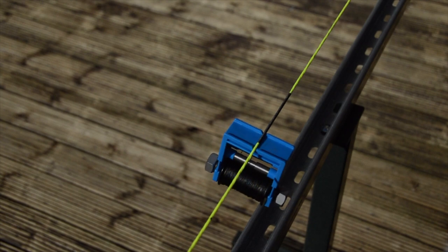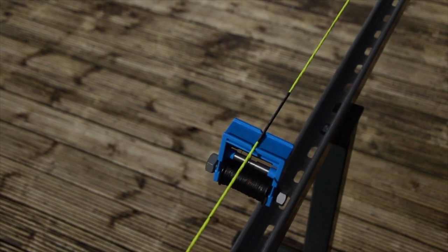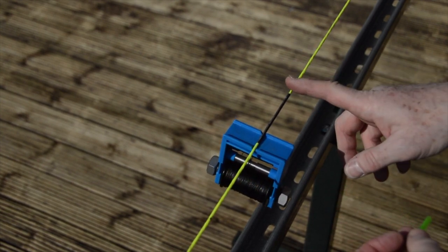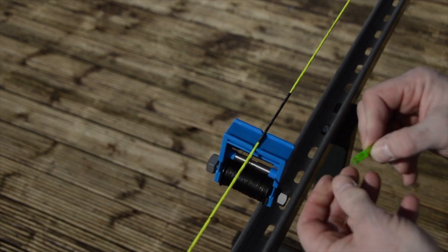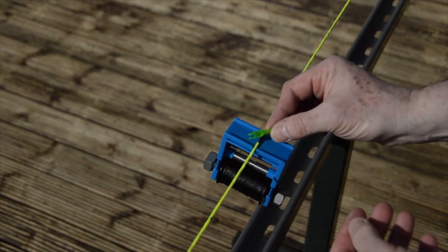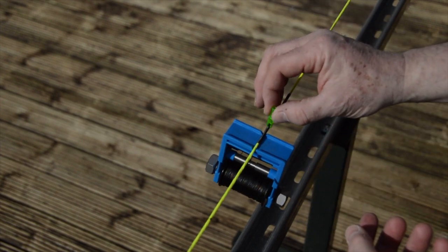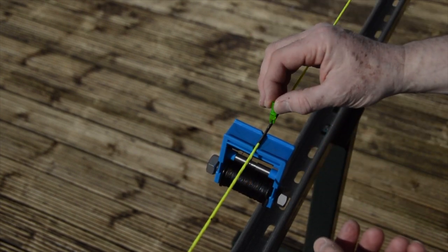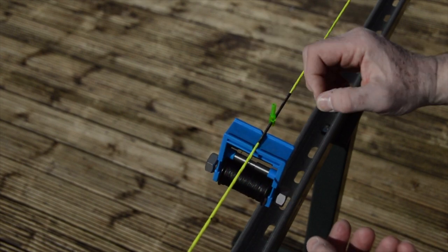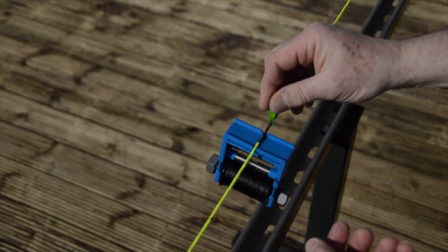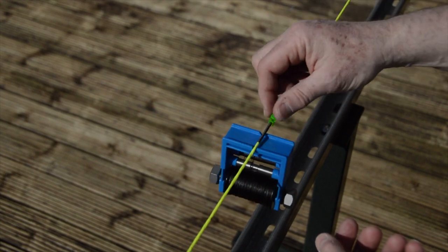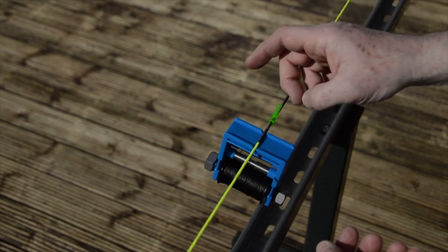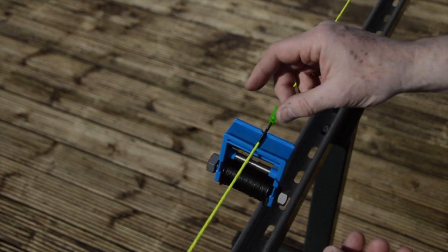Before we go any further, I need to check whether we've got the correct nock fit. This string for a customer is being served for small groove Easton G nocks. I've got one here so I'm just going to clip that onto the string. It should clip with a good solid click, and it does, but it still rotates freely on the string.